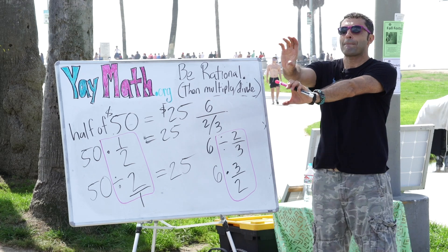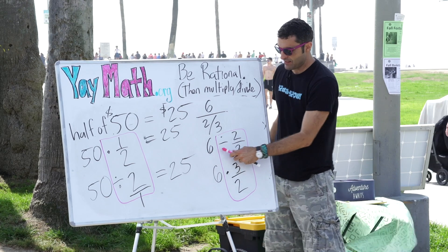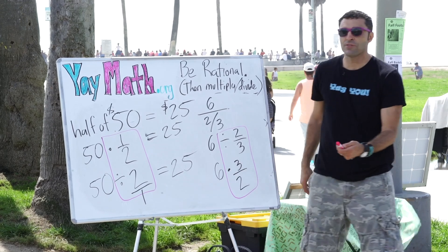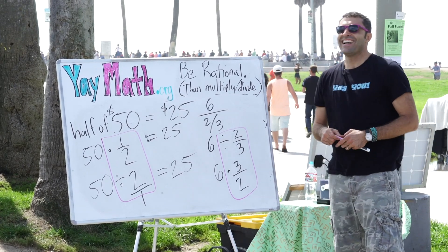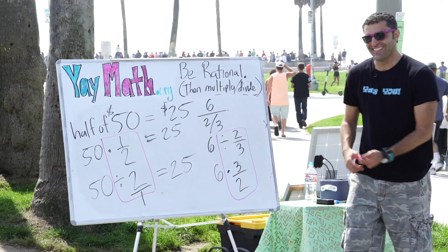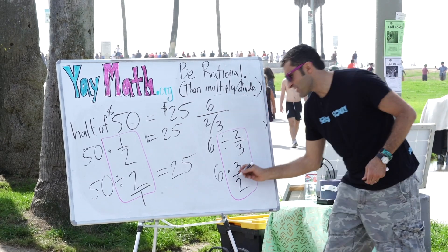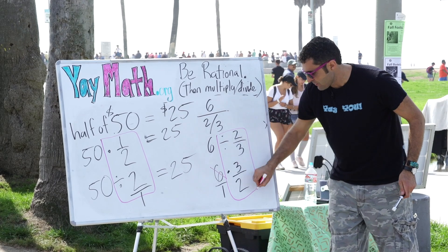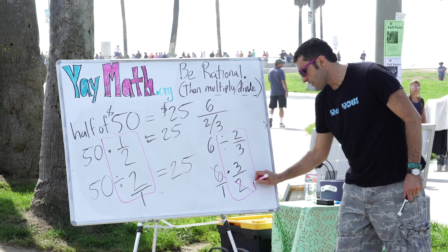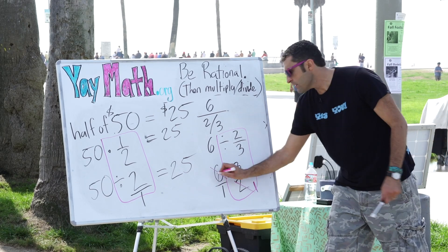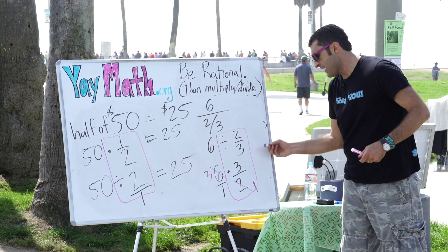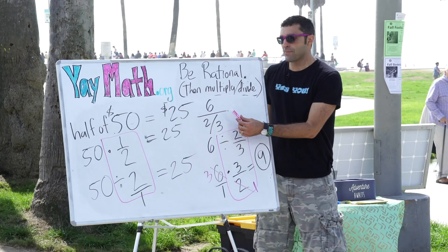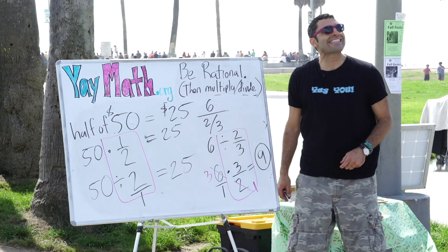Do you guys know what reciprocal means? So is it safe to say that six divided by two-thirds is the same as six times the reciprocal? Six over one — we can do what's called cross-cancel. These can go. Divide both by two: that would be one; divide six by two is three. Multiply across and you get nine. So it happens to be that the number of times two-thirds can fit inside six is nine.